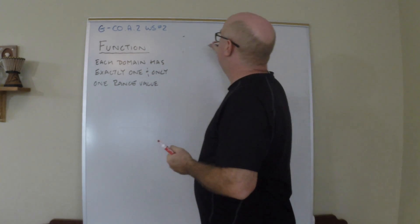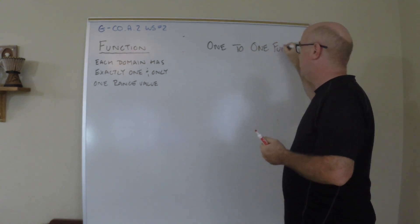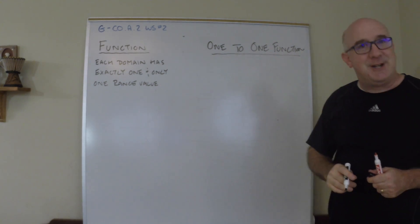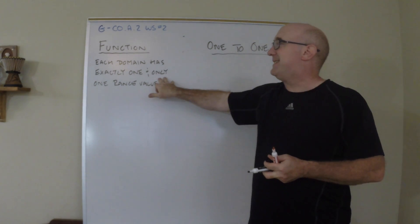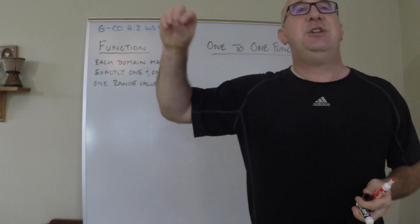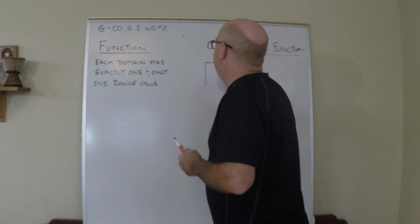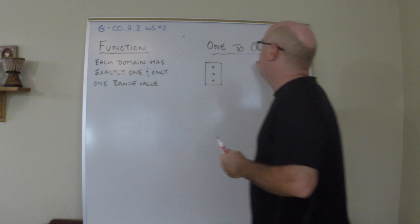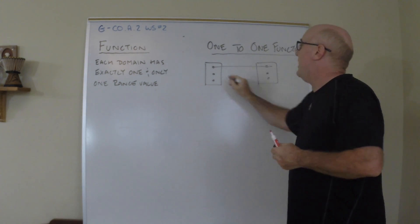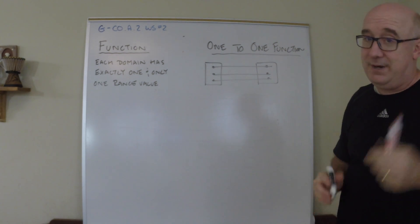We want to match up with something called a one-to-one function. And what a one-to-one function says is that it upgrades this a little bit. That says each member in the domain gets a unique assignment in the range. In other words, it would have to be that if you were assigning a domain to a range, that everybody got a unique partner. That's a one-to-one function.